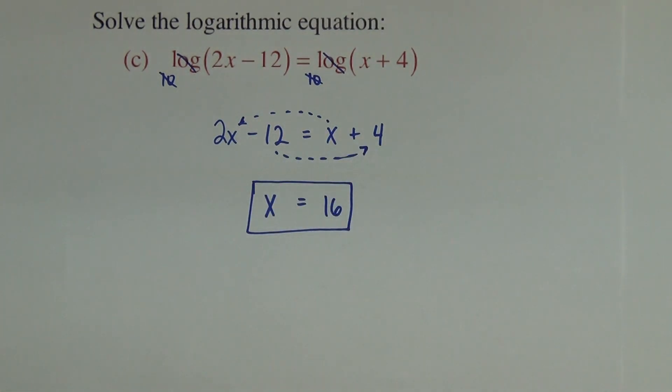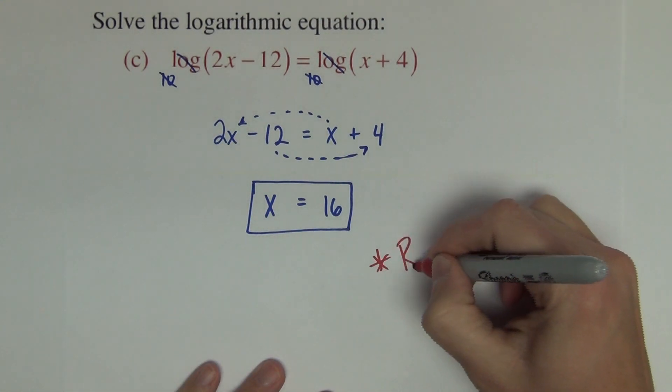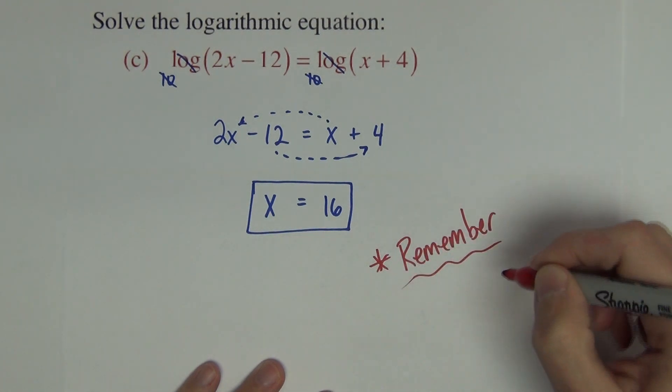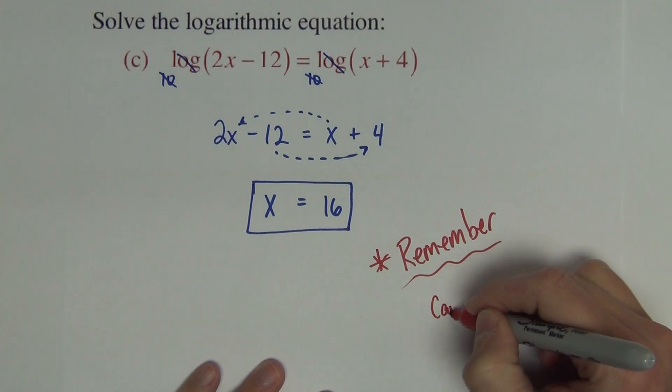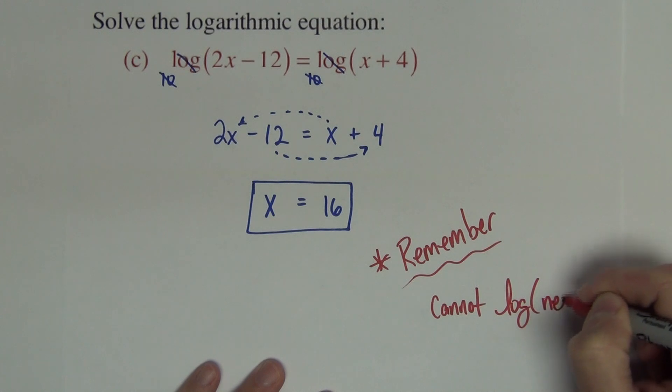Although sometimes logarithmic equations offer up extraneous solutions, on these three I didn't give you any that had extraneous solutions. And I don't recall that I do on the final exam either. But it is something to consider that sometimes you do have extra solutions that will not be valid. Just one thing to always remember with logarithms, and as it relates to the domain of log functions, you cannot take a log of a negative number.